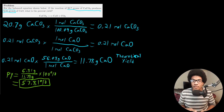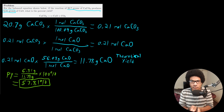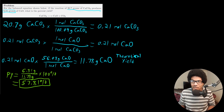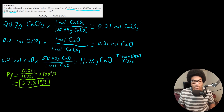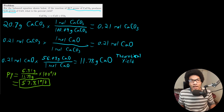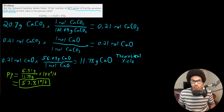Make sure you can identify what is the actual yield and what is the theoretical yield — this is crucial. If you flip them, you'll usually get something over 100%, which should be a red flag. Keep it straight in your mind: the actual yield comes from the experiment — the problem will tell you an experiment was done and produced a certain amount of product, and that is your actual yield.